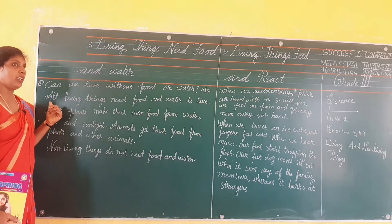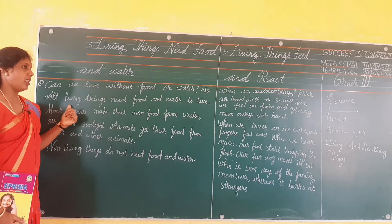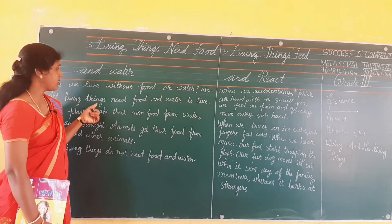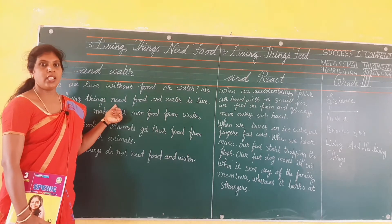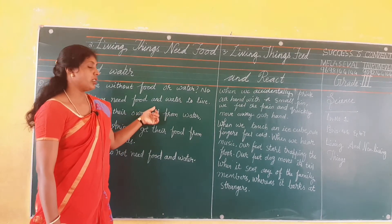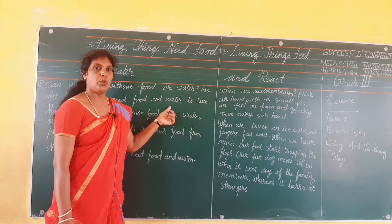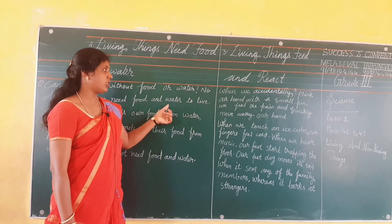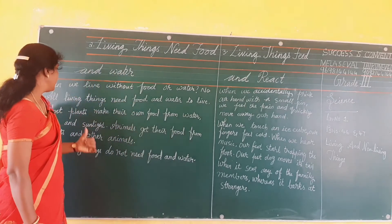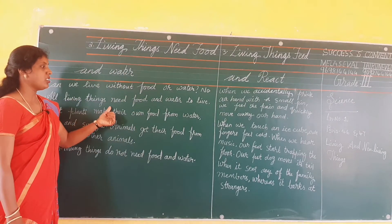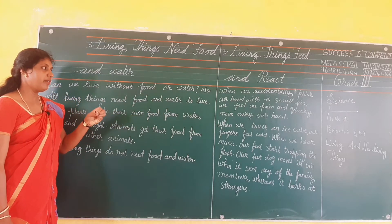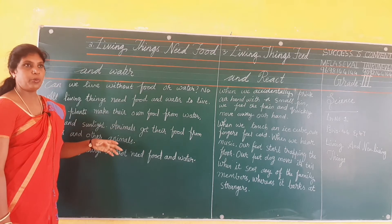All living things need food and water to live. A-L-L, All. L-I-V-I-N-G, Living. T-H-I-N-G-S, Things. N-E-E-D, Need. F-O-O-D, Food. A-N-D, And. W-A-T-E-R, Water. T-O, To. L-I-V-E, Live. All living things need food and water to live.